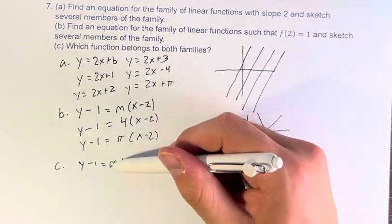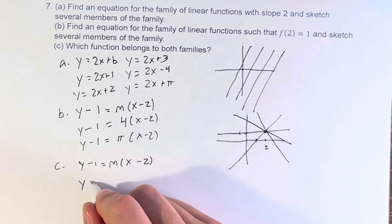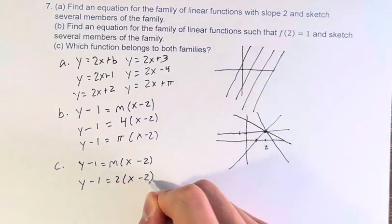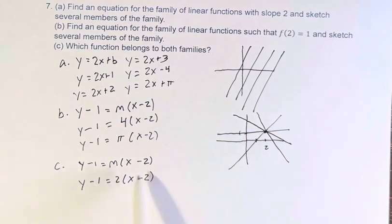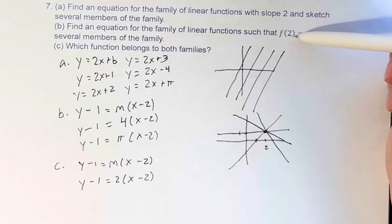Well, m represents the slope in point slope form. So if you just plug in 2, we get y minus 1 is equal to 2 times x minus 2. This equation represents a function that both has slope 2 and an equation for which f of 2 is equal to 1.